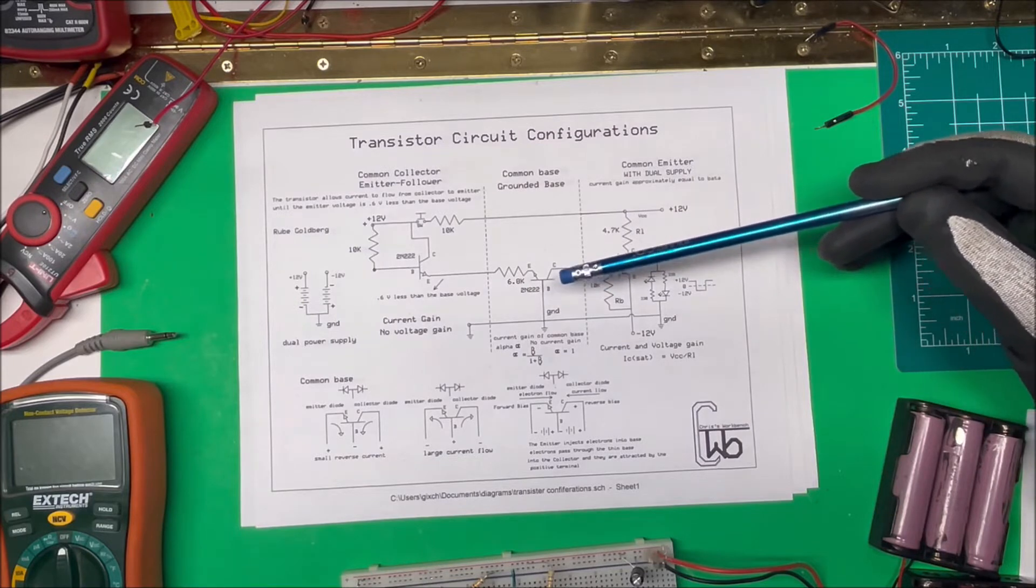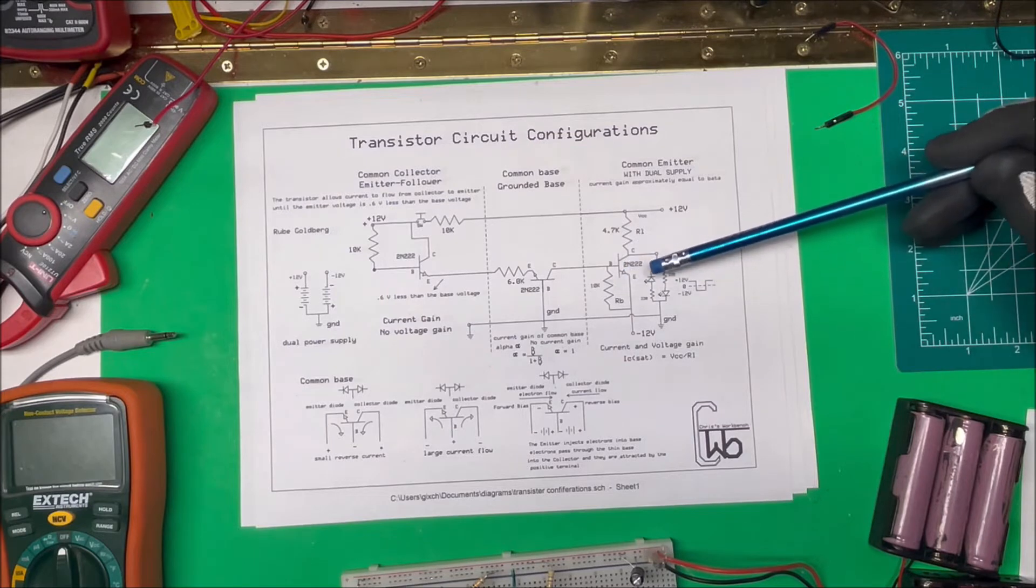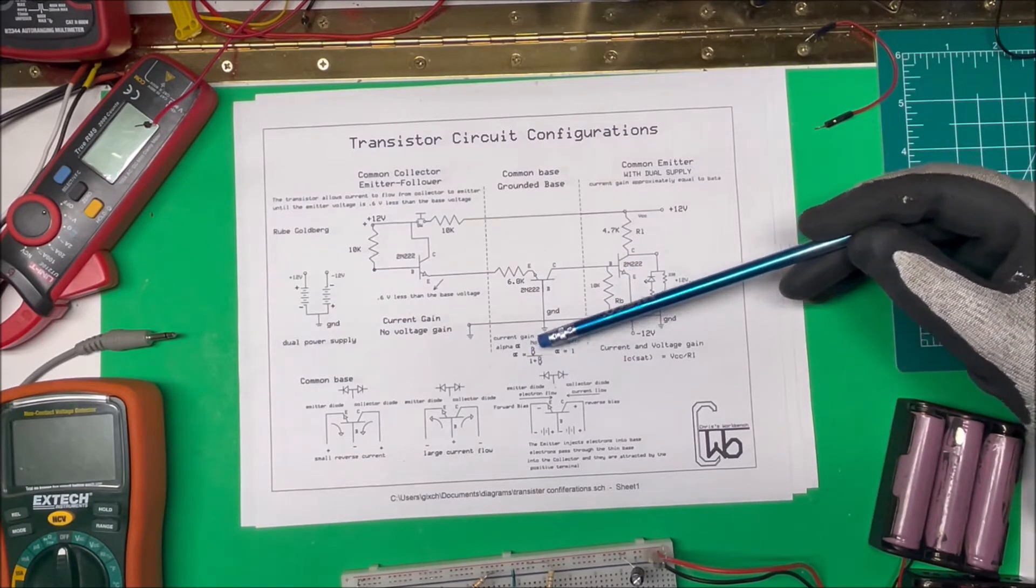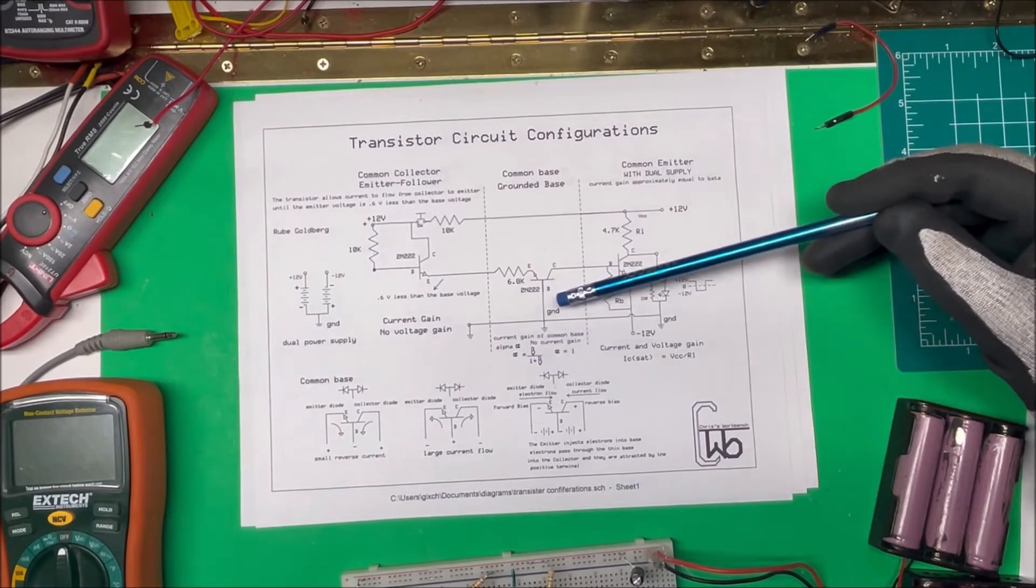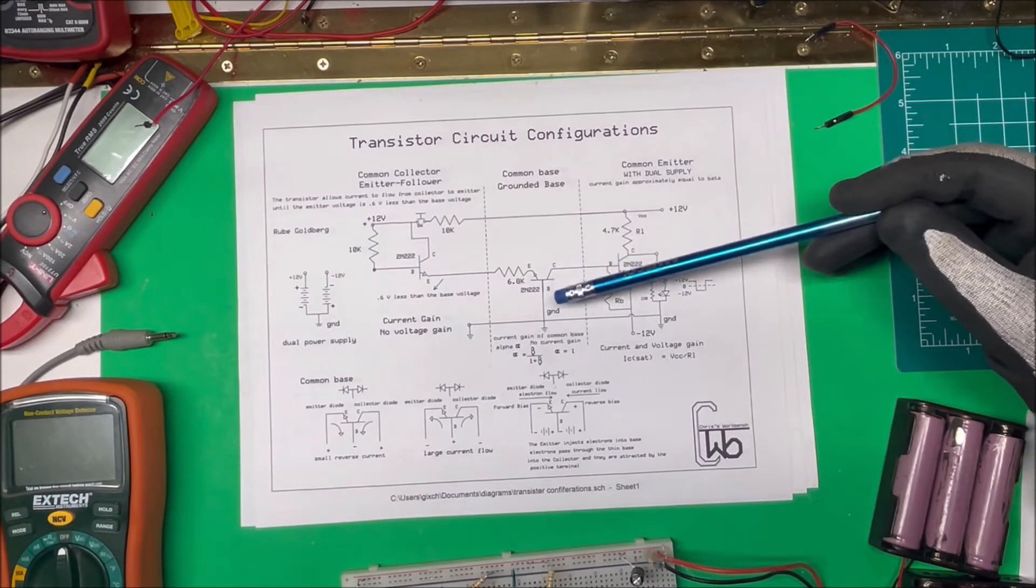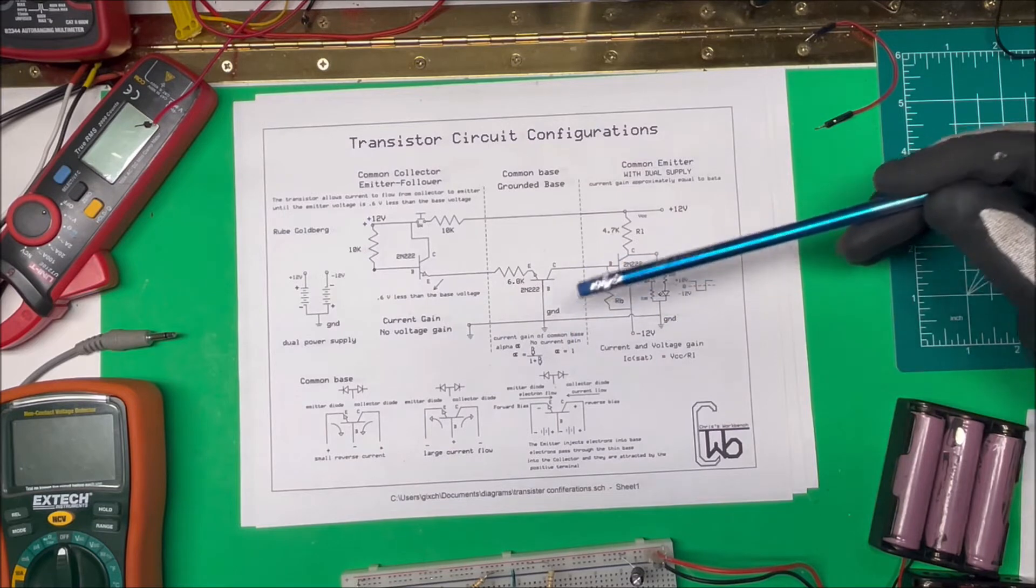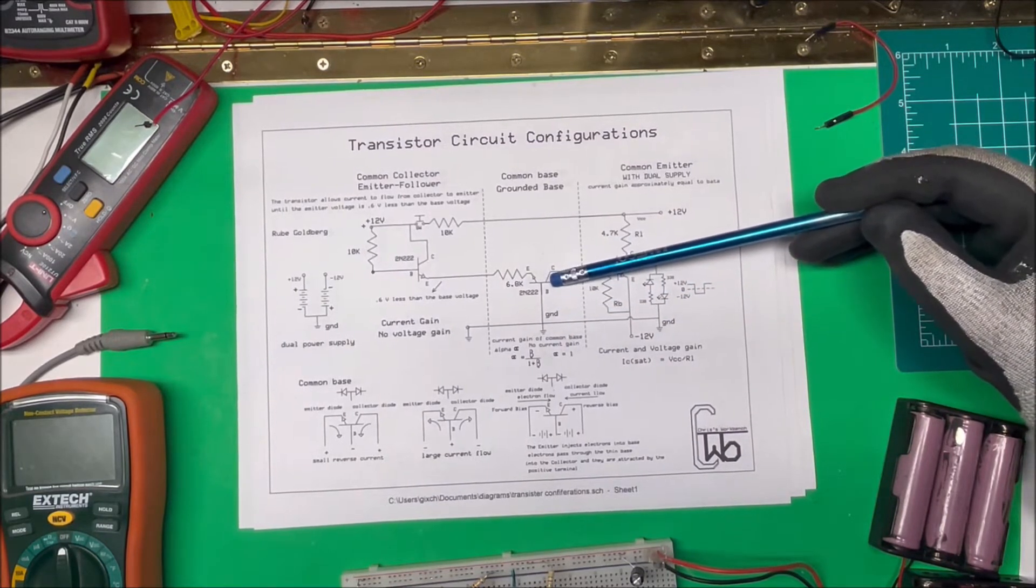Now on a common base, the current gain we call that alpha, and on a common emitter it's beta. The alpha is going to be equal to the beta of the transistor divided by 1 plus the beta of the transistor. So if the transistor has a beta of say 100, then we just take 101 divide that into 100 and it comes out to about 0.99.